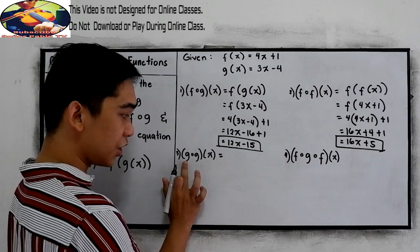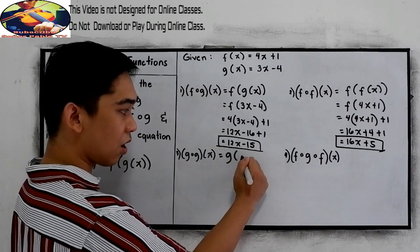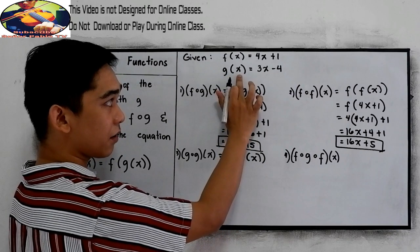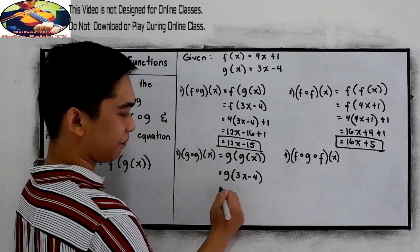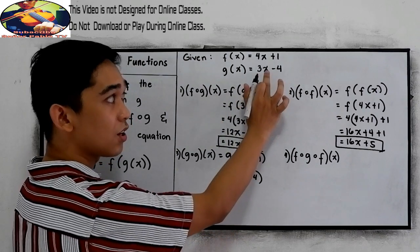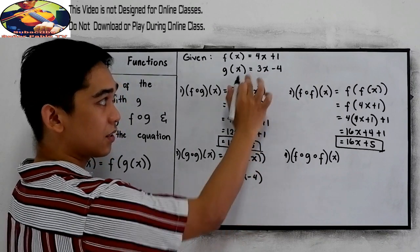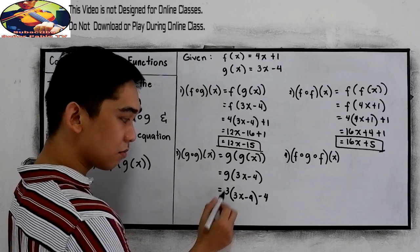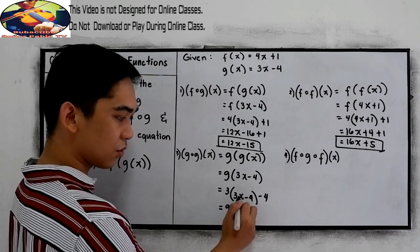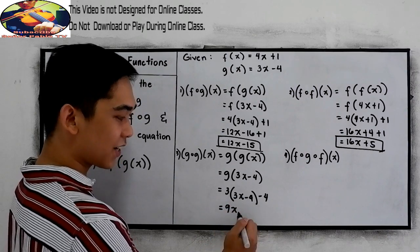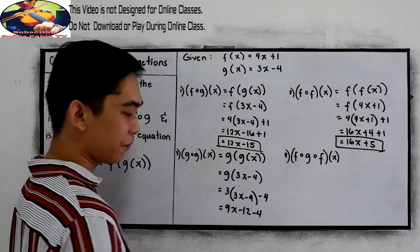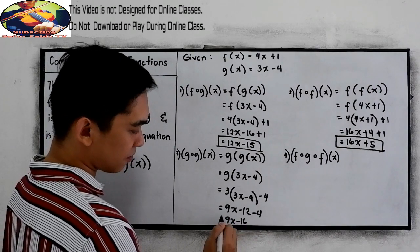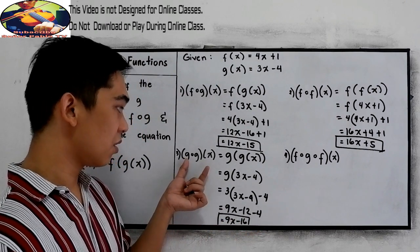Let's check number 3: g composed of g of x, which is the same as g of g of x. G of x is 3x minus 4. Still working with g, change x and substitute to 3x minus 4: so 3 times (3x minus 4), then copy minus 4. Distribute: 3 times 3x is 9x, 3 times negative 4 is negative 12, then minus 4. Combine like terms: 9x, and negative 12 minus 4 is negative 16. So the value of g composed of g of x is 9x minus 16.